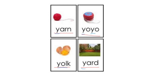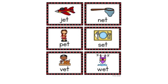Well done everybody! Now let's review words with short E. We know that the letter E is a vowel and it makes the sound 'eh.' Can you show me the letter E in these words?